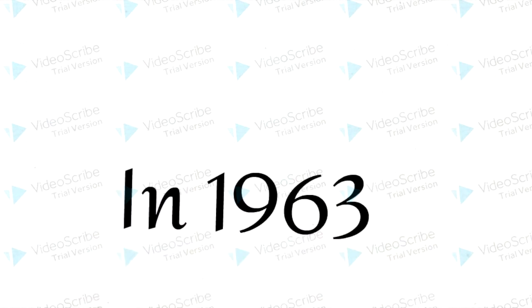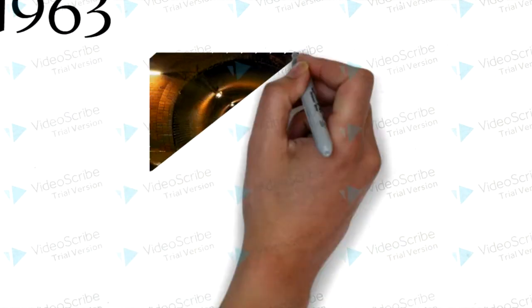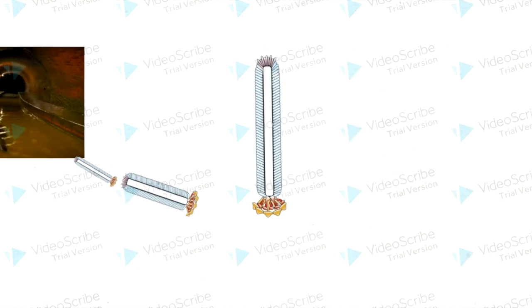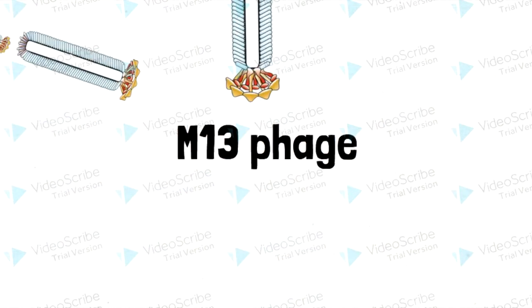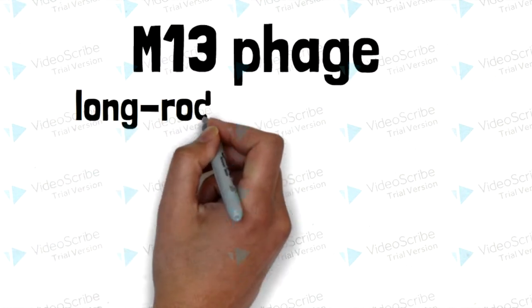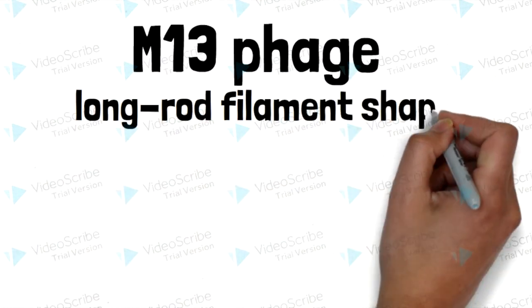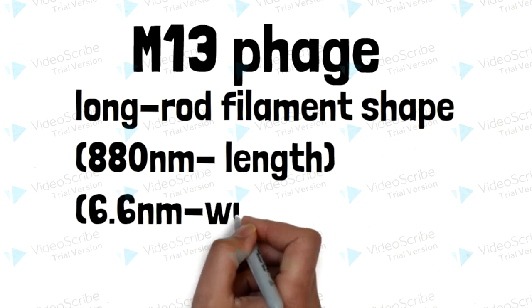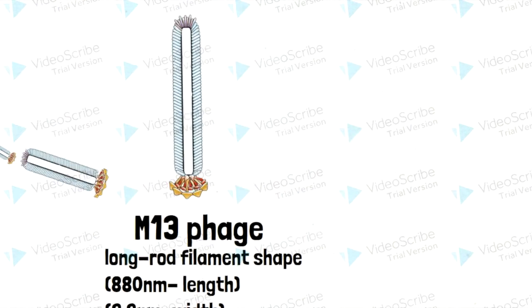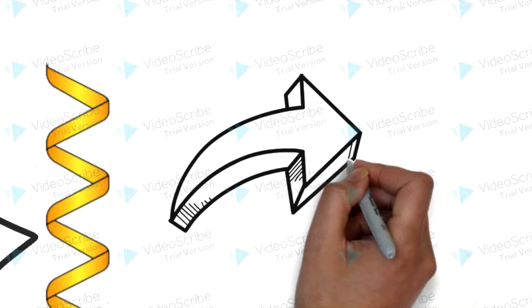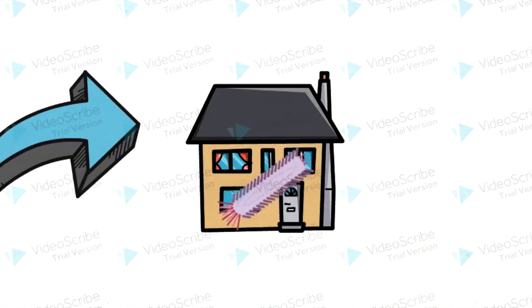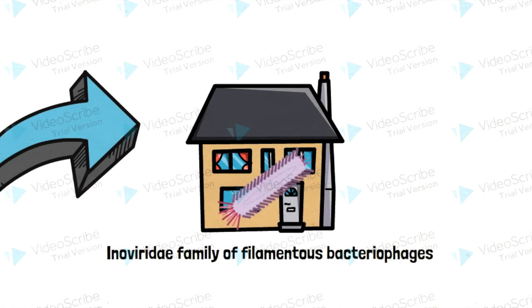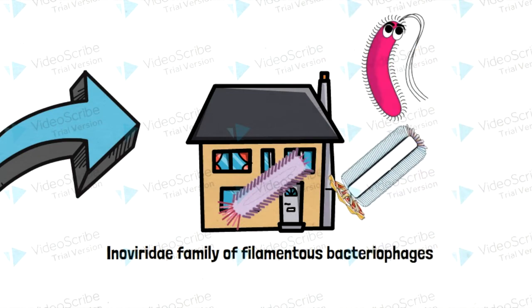A new discovery happened in 1963. An E. coli phage was discovered from the male civil system, named as M13 phage. M13 phage is a long filament that is approximately 818 nm in length and 6.6 nm in width. It is also known as a single-stranded DNA virus that belongs to the Inoviridae family of filamentous bacteriophages, which infect gram-negative bacteria.